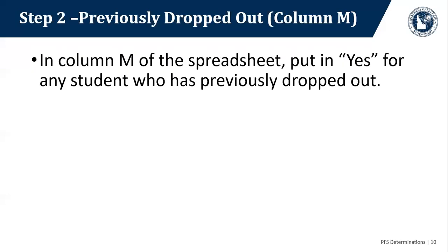The next column to look at is column M. You will review each student and put yes for any student who has previously dropped out. This was changed in the new law when the Every Student Succeeds Act came into being — we are now asked to check if our students have dropped out. If they have dropped out and meet the other criteria of having a QAD in the last year, we can mark those as yes.